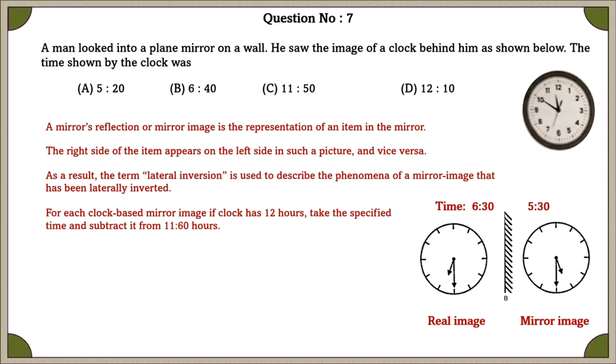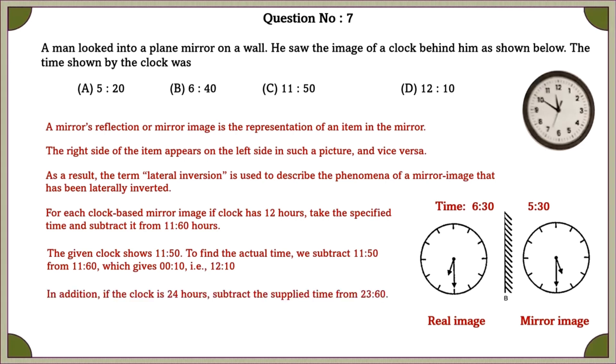take the specified time and subtract it from 11:60 hours. The given clock shows 11:50. To find the actual time, we subtract 11:50 from 11:60, which gives 0:10, that is 12:10. In addition, if the clock is 24 hours, subtract the supplied time from 23:60.